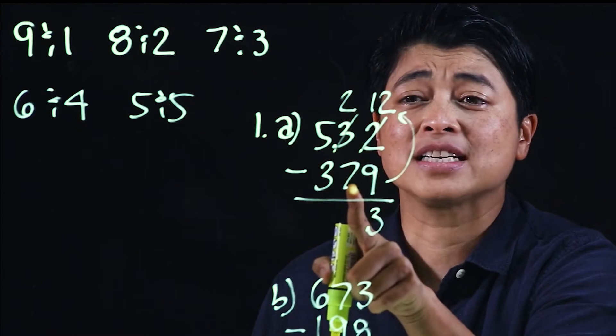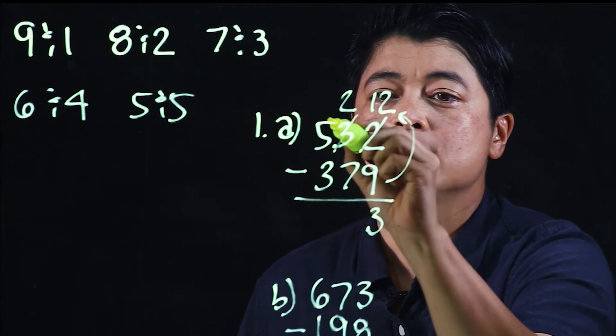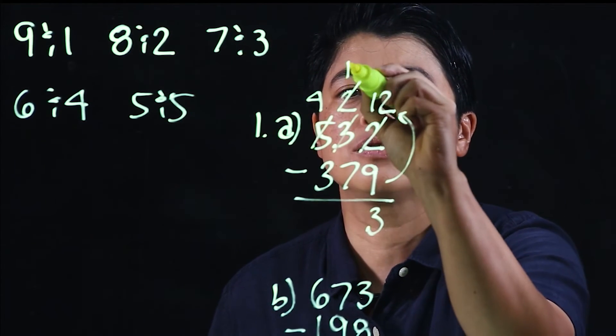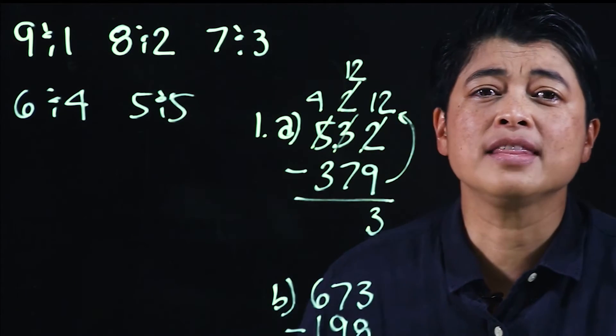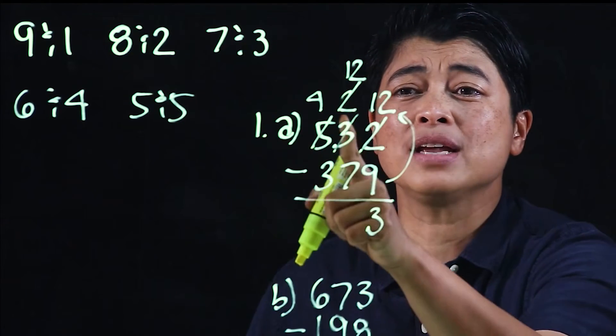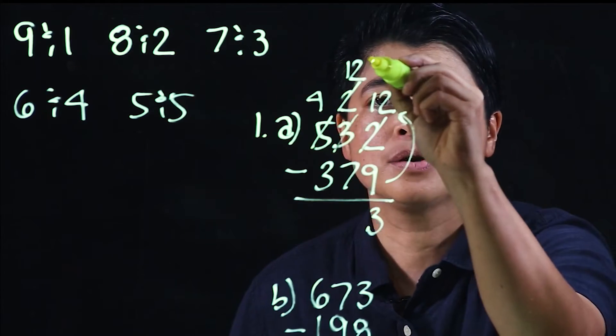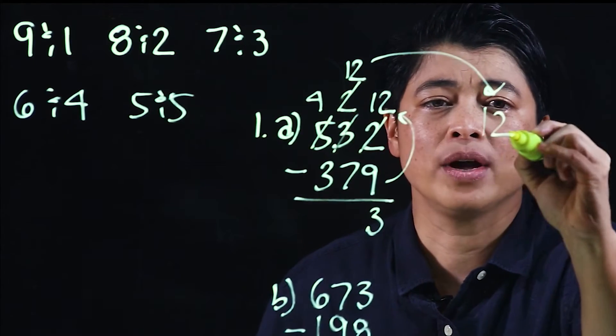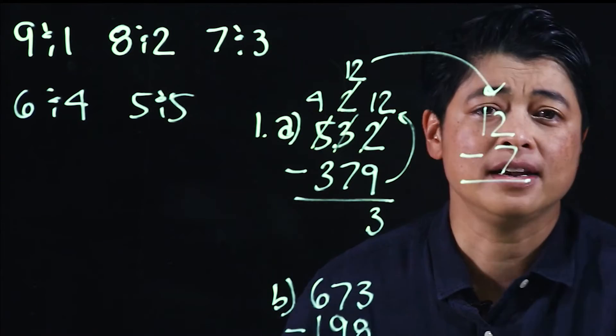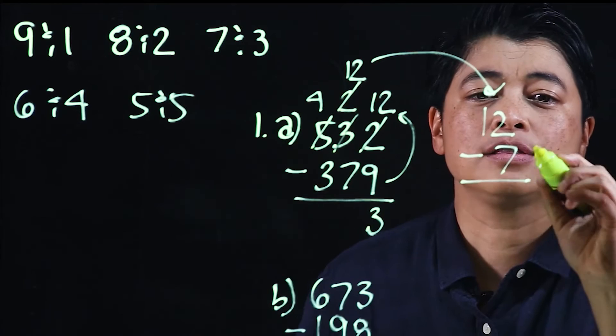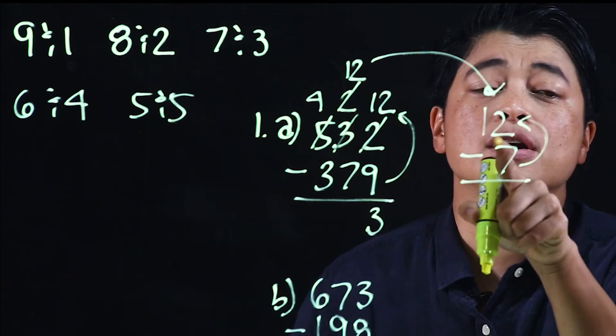Here we subtract seven from two—cannot be—so we again borrow and regroup. One thing I would suggest is don't get lazy and put the one in front when you regroup. Put it on top, which means this is now twelve minus seven.